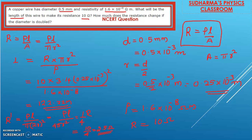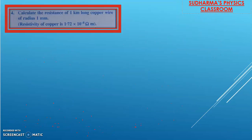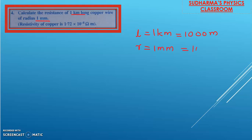Now let us do another question. Calculate the resistance of a 1 kilometer long copper wire. Length L = 1 kilometer, which is 1000 meters — kilometer is not the SI unit of length. Radius R = 1 millimeter = 10⁻³ meters. Resistivity ρ = 1.72 × 10⁻⁸ ohm meter.